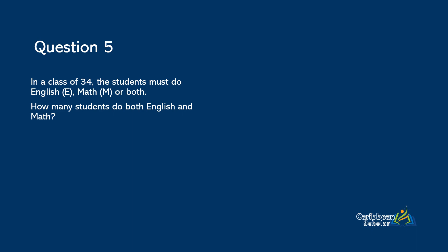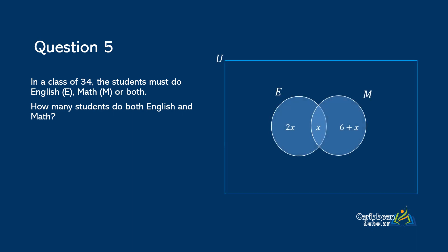The question reads, in a class of thirty four, the students must do English, math or both. And it asks how many students do both English and math? So there's just one more piece of information that we need to fully interpret the question. And that is this Venn diagram here. So this Venn diagram is showing the number of students in each set. So now that we have this information, where do we even start? Well, we have to start by relating the question to set theory. So the first sentence tells us that in a class of thirty four, students must do English, math or both. So we know from the or that we are thinking union. And because they must do either or of these things, then we know that the entirety of the set or the whole class is doing English and math. So the number of students in the union is thirty four.